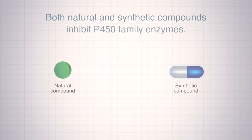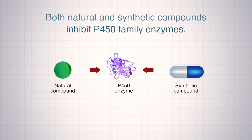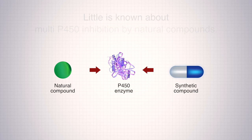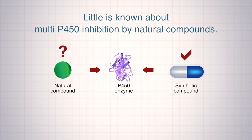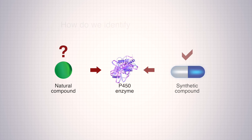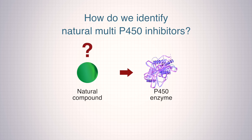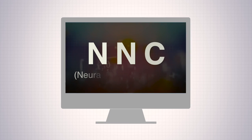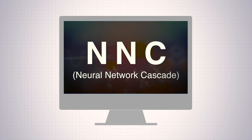Both natural and synthetic compounds inhibit P450s, but little is known about multi-P450 inhibition by natural compounds. So, we tried to identify natural multi-P450 inhibitors that will help their rational use and reduce drug interactions by developing a computational model called NNC.